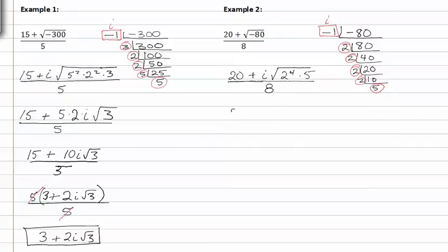From here I can pull out those factors inside the radical. Two to the fourth can be divided by the index of two and I'm left with zero remainders and two twos come out. My five is prime so it stays in the radical all over eight.